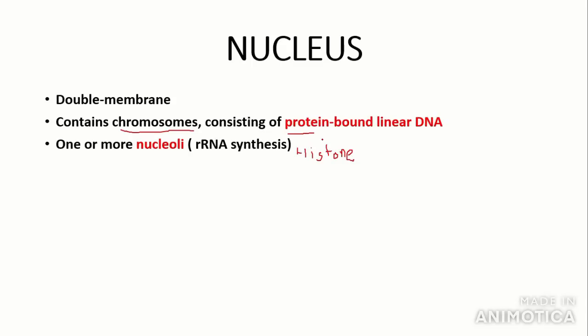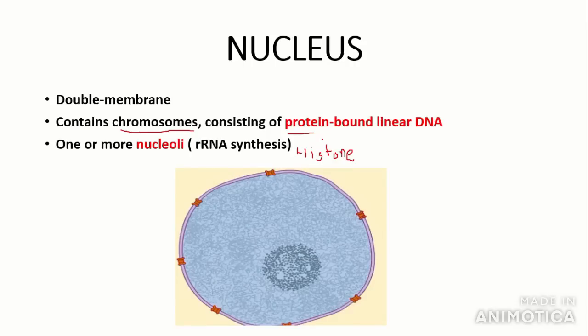The nucleus also has one or more nucleoli, which is a denser part of the nucleus whose job is to synthesize rRNA, or ribosomal RNA, which makes up ribosomes whose job is to perform protein synthesis. Here in the diagram you can see the double membrane, these orange structures called nucleopores whose main job is to export recently transcribed rRNA and mRNA into the cytoplasm, and the darker denser part which is the nucleolus.